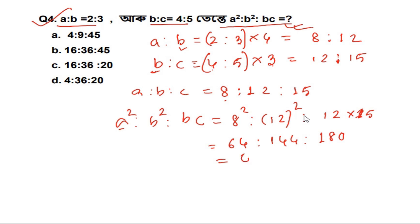4 is equal to 4, we cancel. 8 is equal to 16. Then 6 is equal to 45. So the result is 16 is to 36 is to 45.